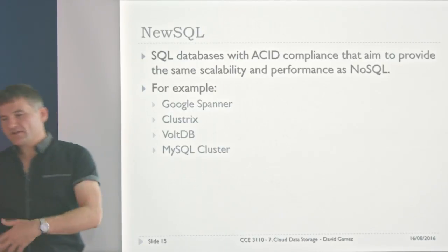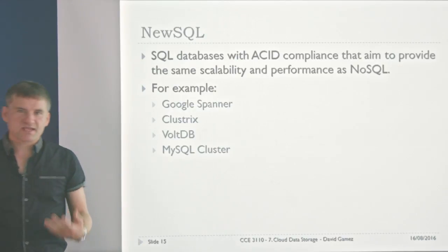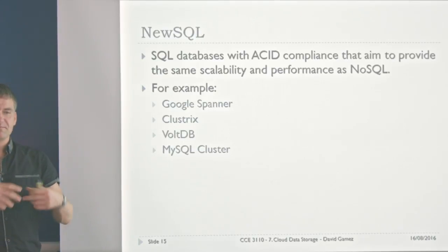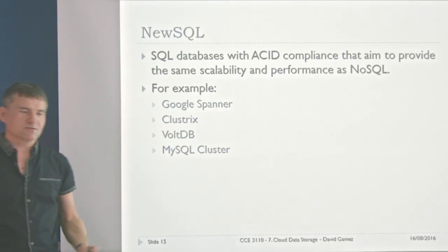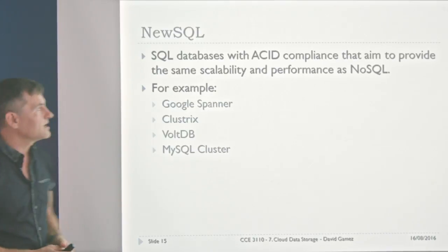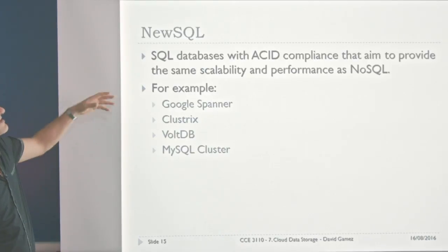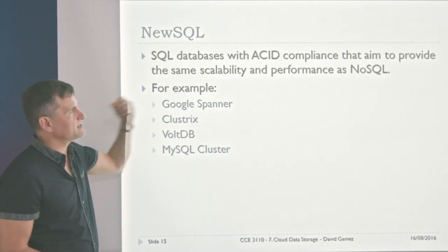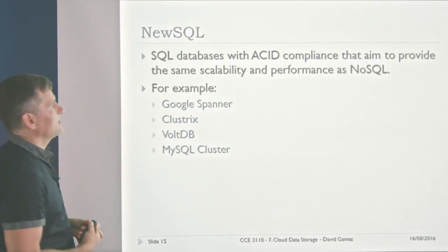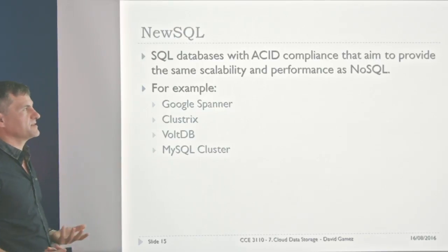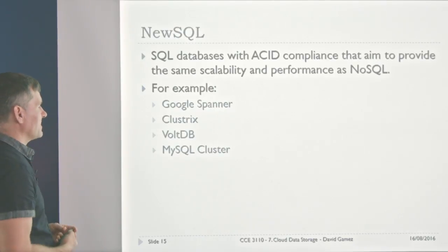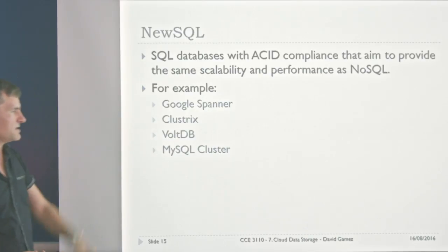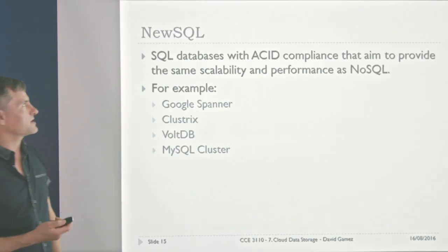In response to NoSQL, some people said maybe the ACID properties weren't so bad, and that we could build bigger, more scalable databases that are ACID compliant. This led to what's called NewSQL — SQL databases with ACID compliance that aim to provide the same scalability and performance as NoSQL. Examples include Google Spanner, Clustrix, VaultDB, and MySQL Cluster.